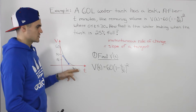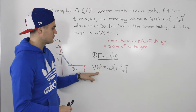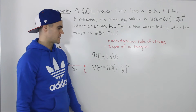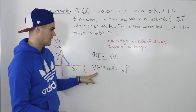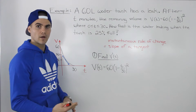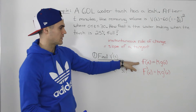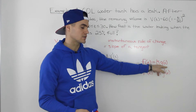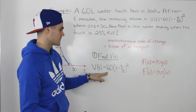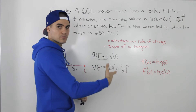To find the slope of the tangent, we need the derivative of V(t) = 60[1 - t/30]². We could use the product rule, but an easier approach is the constant multiple rule: since 60 is a constant, the derivative is just 60 times the derivative of the inner function [1 - t/30]². We'll also rewrite t/30 as (1/30)t to make it easier to differentiate, since separating the variable from the constant simplifies the process.